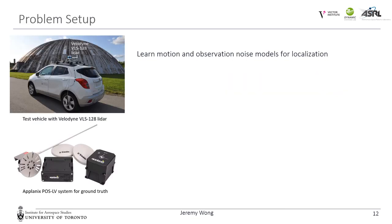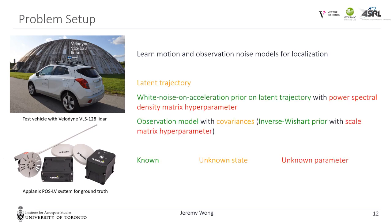The problem we wish to tackle is learning motion and observation noise models for localization of a vehicle against a high-definition map. Our vehicle is equipped with a Velodyne 128 LiDAR and an Applanix POS-LV positioning system for ground truth. We have an unknown latent trajectory, and we place a white noise on acceleration prior on the latent trajectory with an unknown power spectral density matrix. We also have a known observation model but with unknown covariances. Because the quality of measurements can depend on many factors, instead of learning static measurement covariances, we include time-varying measurement covariances as part of our state to be estimated, and place an inverse Wishart prior on it. We then estimate some of the parameters of the inverse Wishart prior.